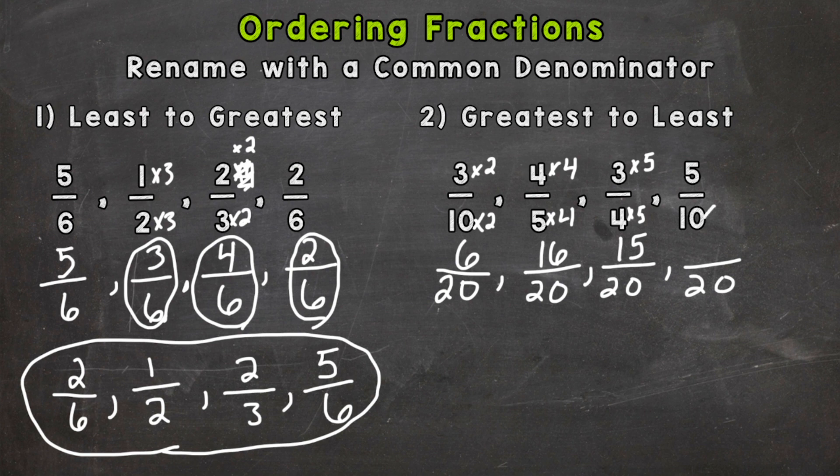And lastly, 10 times 2 is 20. 5 times 2 is 10. Now that everything's out of 20, it's much easier to put these in order.